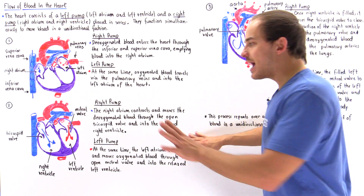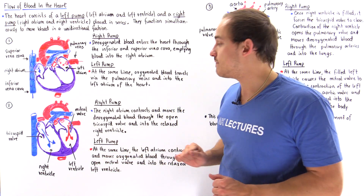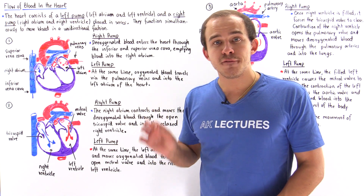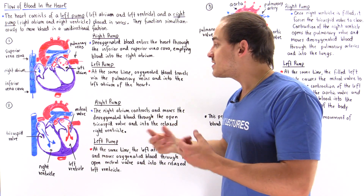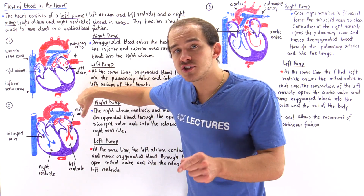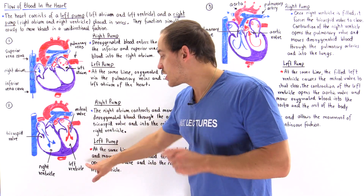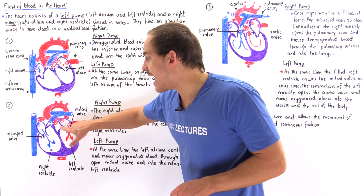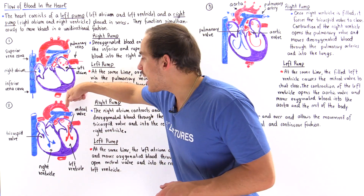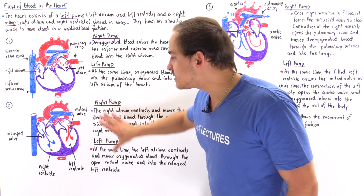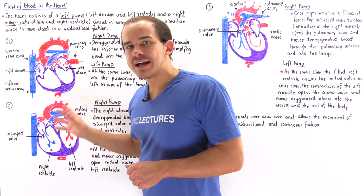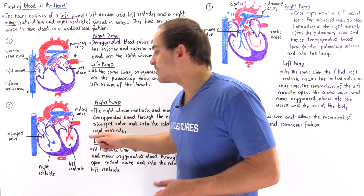At the same moment, on the left side, the fully filled left atrium contracts, opening the bicuspid (mitral) valve, allowing oxygenated blood to flow into the fully relaxed left ventricle. The aortic valve remains closed to prevent backflow from the aorta back into the left ventricle. So in stage two, both atria contract while both ventricles are fully relaxed.